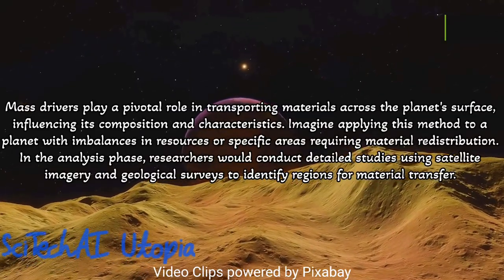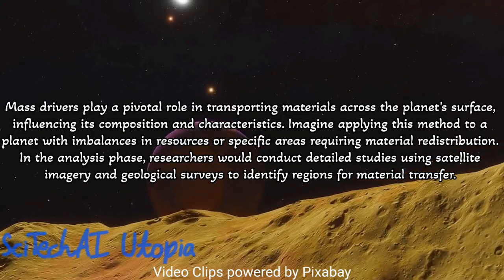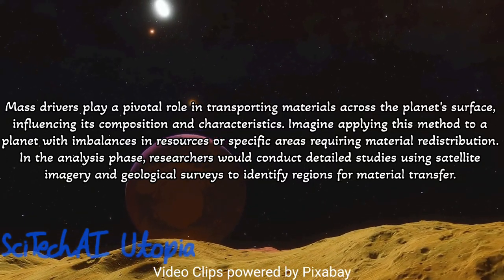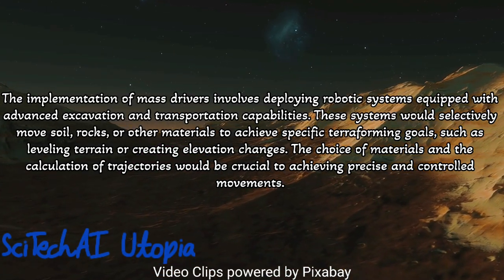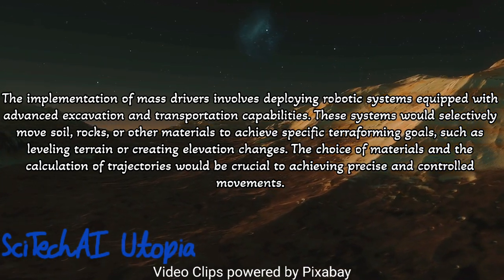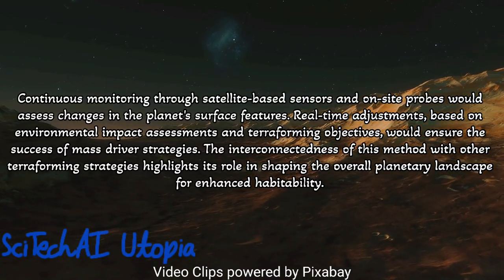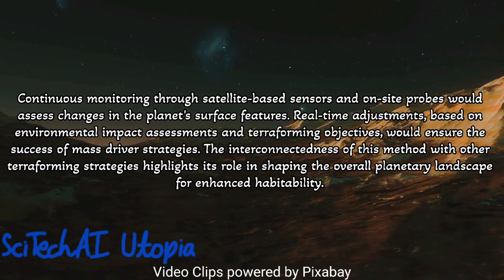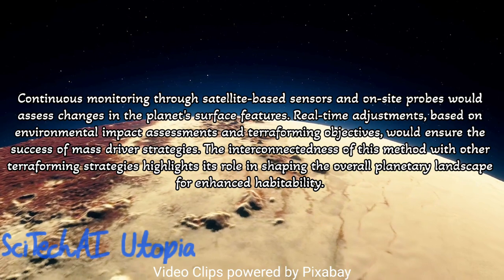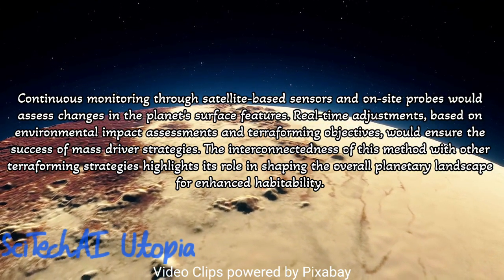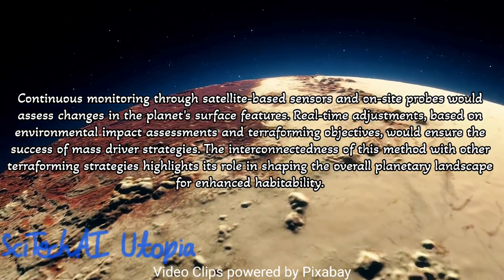Method 13: Mass Drivers. Begin by identifying valuable resources required for terraforming, such as minerals, water, or gases, both on the target planet and in nearby celestial bodies. Develop a network of mass drivers, electromagnetic catapults, or accelerators designed to launch payloads from the planet's surface into space. Implement a precise targeting system to direct payloads towards specific destinations, whether to transport resources from the planet or to influence celestial bodies that could impact the terraforming process. Consider energy-efficient propulsion methods like magnetic or electromagnetic acceleration to minimize environmental impact and maximize payload capacity, with automated systems for loading and launching.